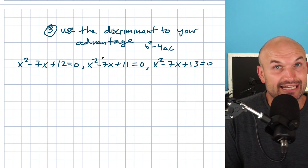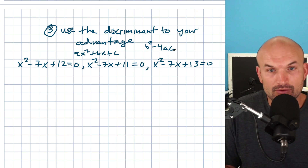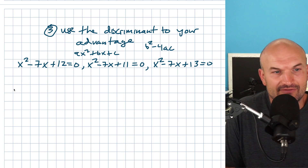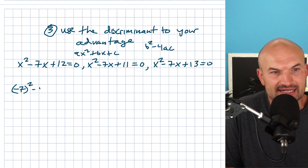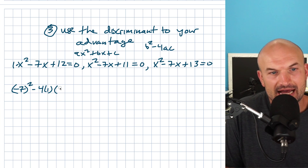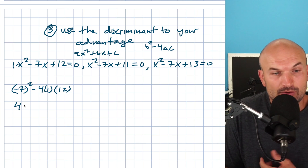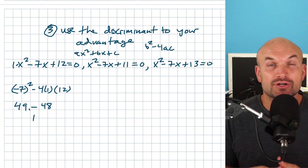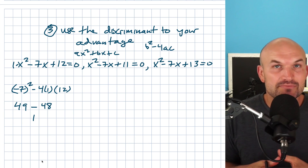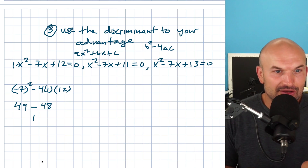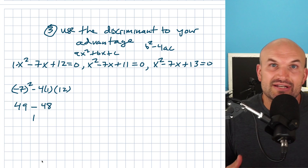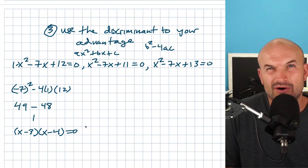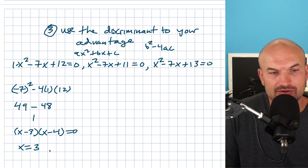Make sure all equations are set equal to zero in standard form AX squared plus BX plus C, then plug values into B squared minus 4AC. In the first example, negative 7 squared minus 4 times 1 times 12 gives 49 minus 48, which equals 1. Whenever the discriminant is a perfect square, you'll have two real rational solutions, meaning the equation is more than likely factorable. The two factors that multiply to positive 12 and add to negative 7 are negative 3 and negative 4, so factored form is x minus 3 times x minus 4 equals zero, giving x equals 3 and x equals 4.